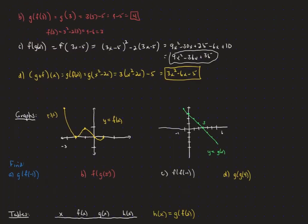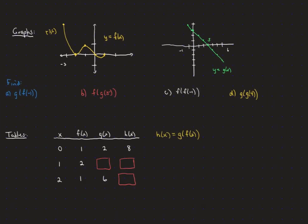Now we'll do the same idea but with functions given as graphs. f is our function in yellow and g is in green. For g of f of negative 1, we first find f(−1): on the f graph we go to −1 and read the y-value as positive 1. Then we go to the g function, where 1 is the x-value, giving a y-value of 2. So g of f of negative 1 equals 2.